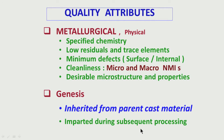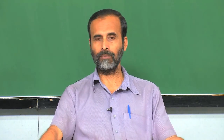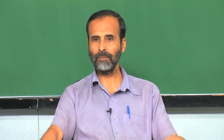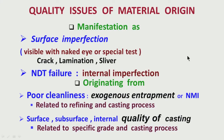I also talked about certain quality attributes which are imparted during subsequent processing — whether the cast stage has been hot rolled or cold rolled, hot forged, and so on. Certain quality attributes might crop up during those processing stages. Those are called processing quality issues, which are not being covered in the present topic. Then I talked about how these are basically manifested — because we have talked about different attributes, but in the final product, in which way these quality issues are manifested.